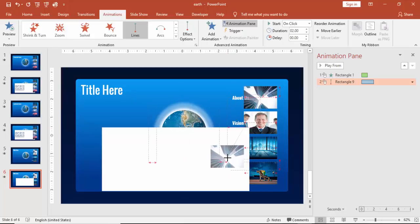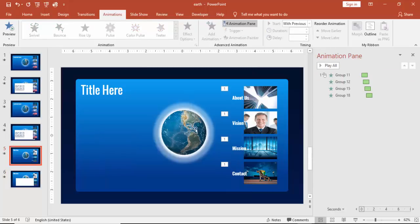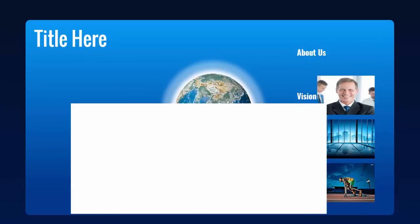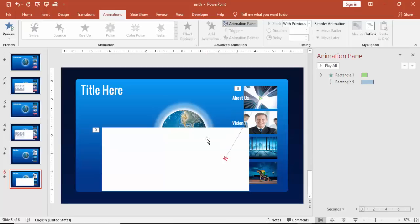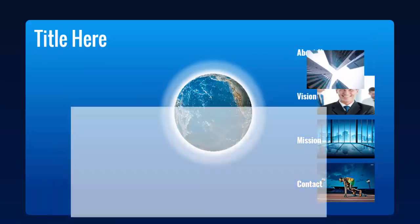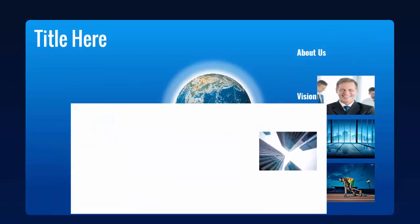Select the image, go to Add Animation, scroll down and select the Motion Path Line. Drag the line so the endpoint is on the white rectangle. Make this With Previous, and the first animation should also be With Previous. Going to the first slide the menu will come. The About Us image is going to the backside, so we have to bring it to front. Select Bring to Front — and yes, this is okay.